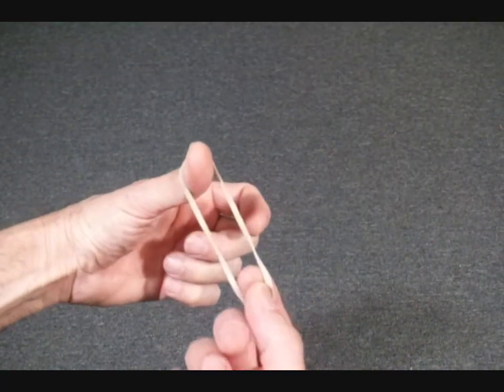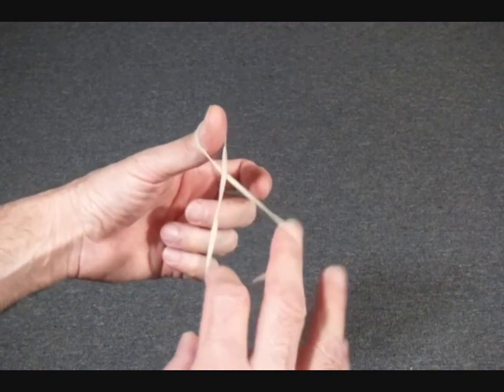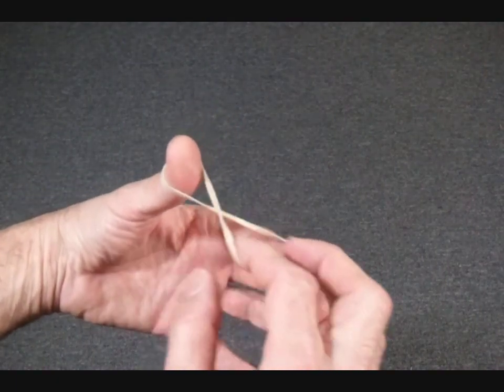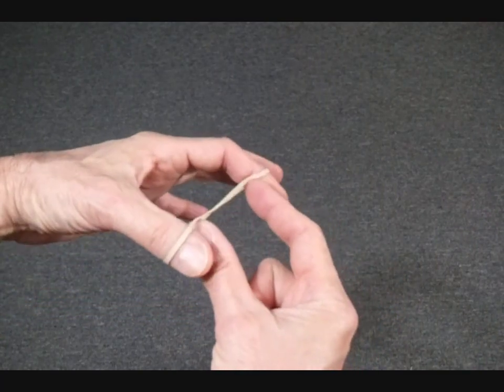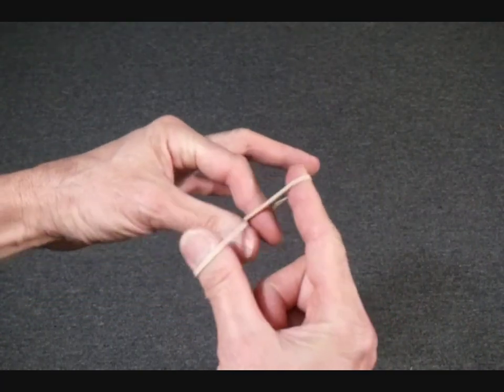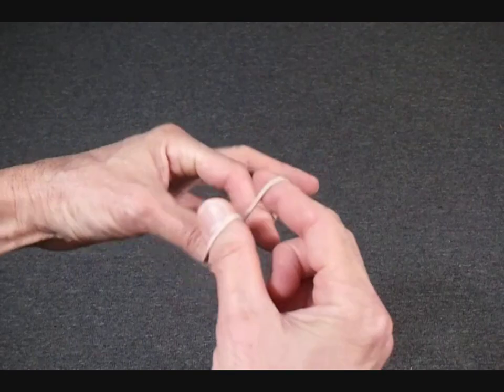Once you've mastered that, we'll put a half twist in it and do the double twiddle. Put the loop on the second finger, put the same two fingers in the same holes from the other side, and I'm twiddling my index fingers in one direction, my thumbs in the opposite direction.